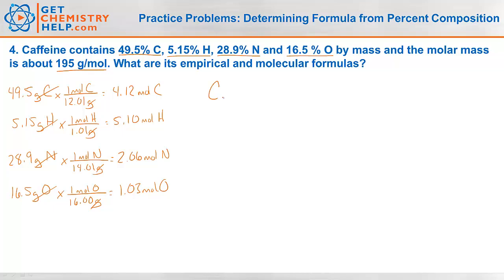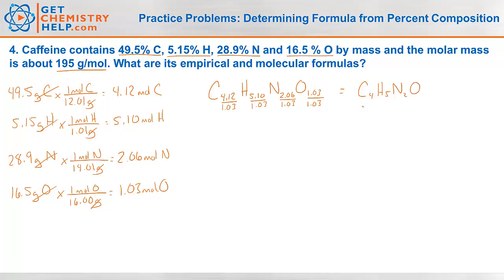We write our pseudo-formula: C(4.12), H(5.10), N(2.06), O(1.03). Dividing them all by the smallest, which is 1.03, leaves me C₄H₅N₂O. This is the empirical formula — the smallest whole number ratio of atoms.